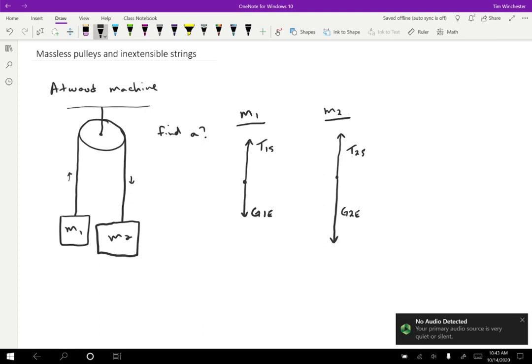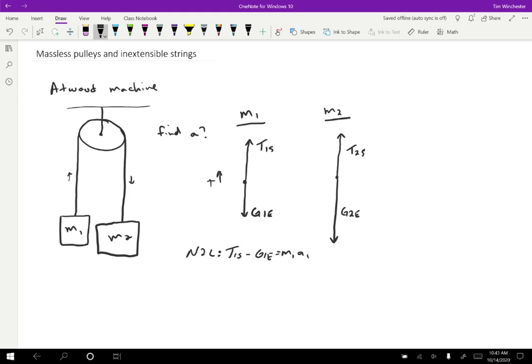Let's write out what we know. Using Newton's second law for M1, let's take the positive direction to be upward. Then T1S minus G1E equals M1A1. For mass two, I'm going to choose downward to be positive so the direction of actual motion is positive for each mass. Then G2E minus T2S equals M2A2.